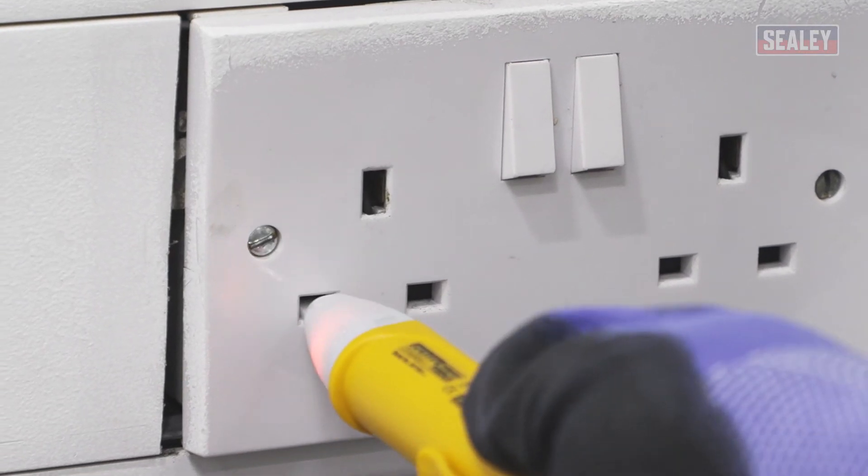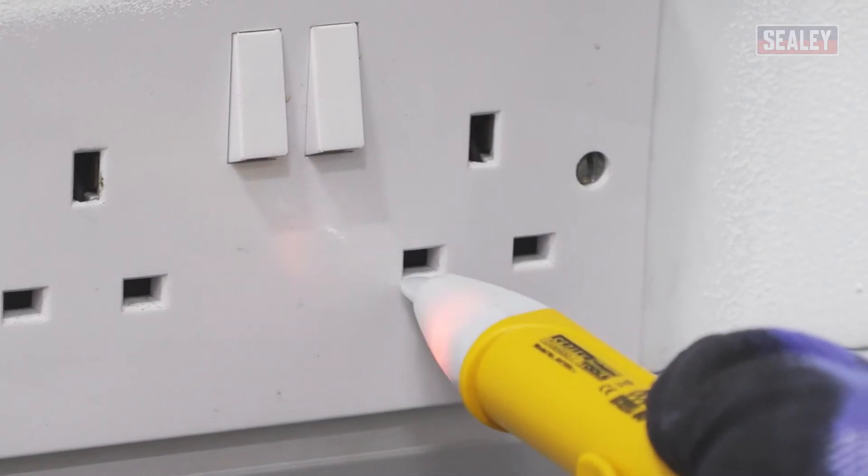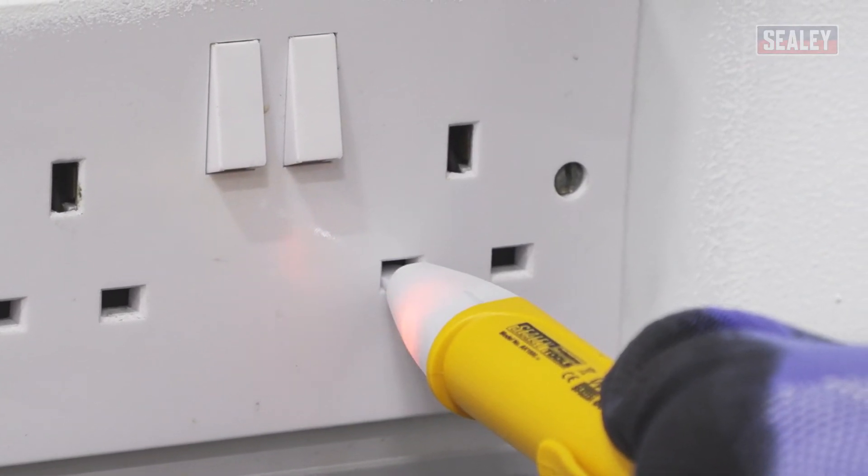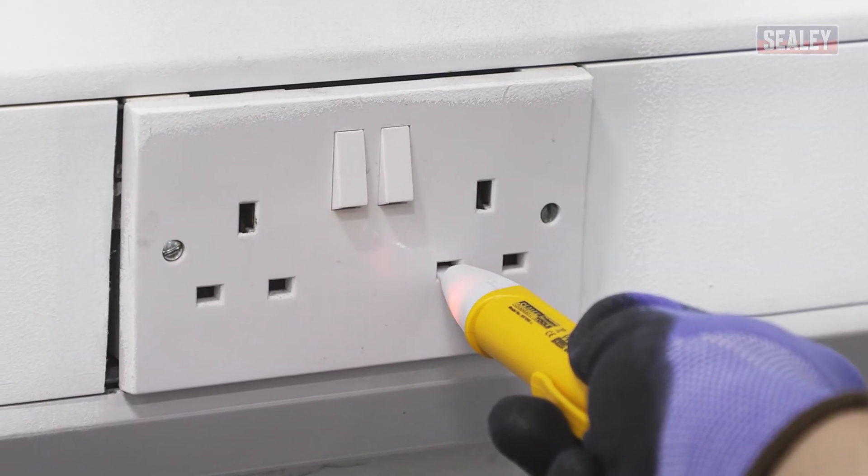Electrical plugs and sockets can be checked by placing the tip of the unit on them. If there are multiple sockets in an area, test each one to ensure that they're all disconnected in case they've been wired via separate circuits.